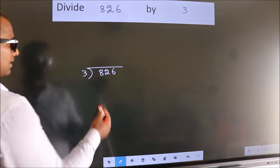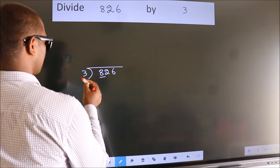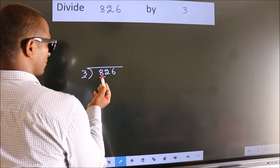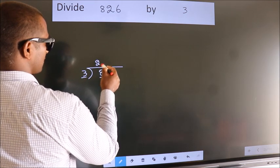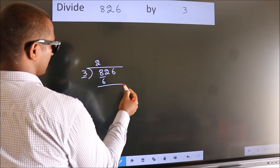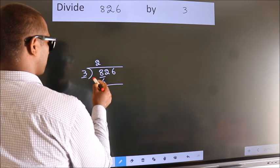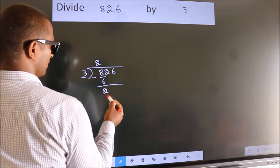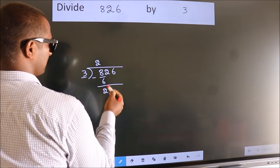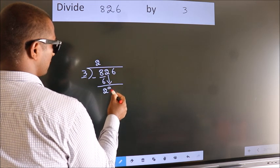Next, here we have 8, here 3. A number close to 8 in the 3 table is 3 times 2 equals 6. Now we should subtract. We get 2. After this, bring down the beside number, so 2 down.